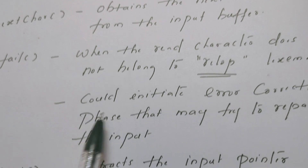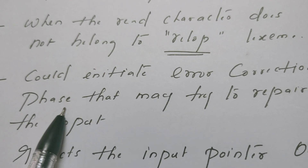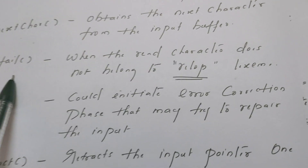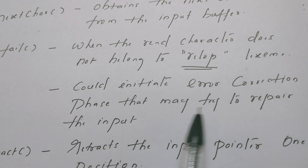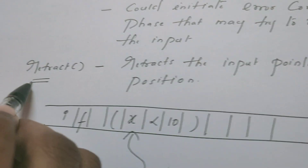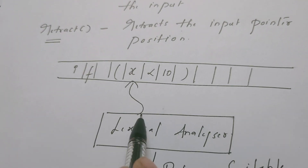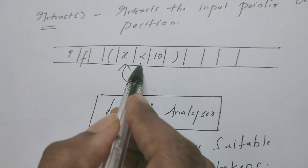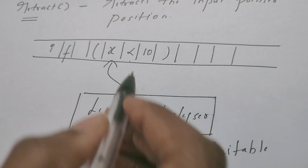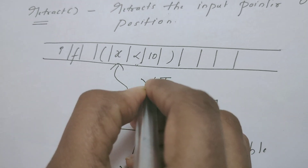The other purpose of the fail method is it will automatically initiate the error correction phase, because every phase of the compiler is capable of handling errors. The lexical analyzer through this method initiates error correction which may try to repair the input. The retract method retracts the input pointer one position. For example, assume the lexical analyzer is reading the less than symbol. Just by reading the less than symbol, it cannot conclude that it is the less than operator.